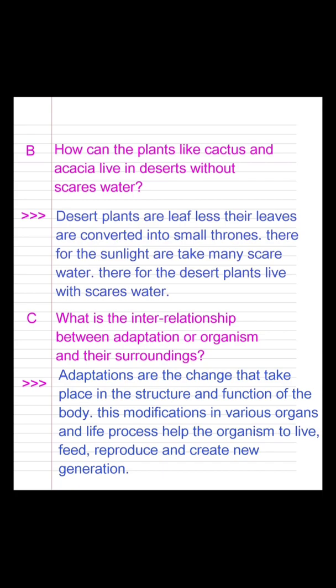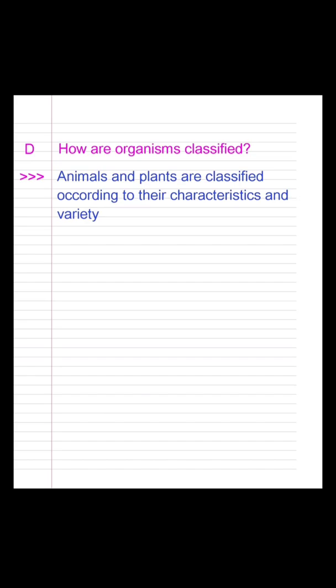Question C: What is the interrelationship between adaptation of organisms and their surroundings? Answer: Adaptations are changes that take place in the structure and function of the body. These modifications in various organs and life processes help organisms to live, feed, reproduce, and create new generations. Question D: How are organisms classified? Answer: Animals and plants are classified according to their characteristics and variety.